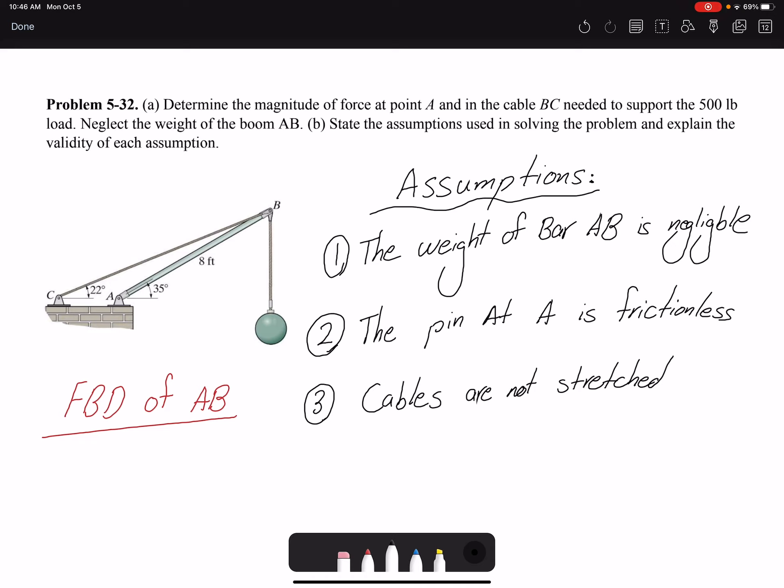To identify the assumptions and the validity of those assumptions, in statics you're going to start with simple assumptions and towards the program you're going to learn about other assumptions. One assumption the problem has given us is the weight of bar AB is negligible.